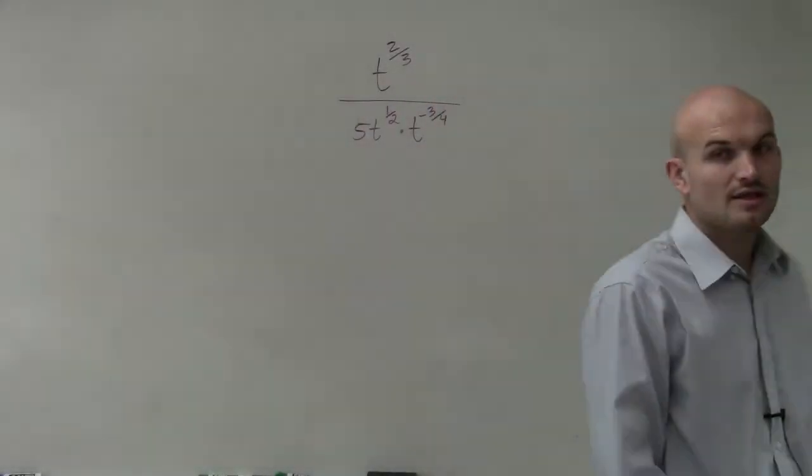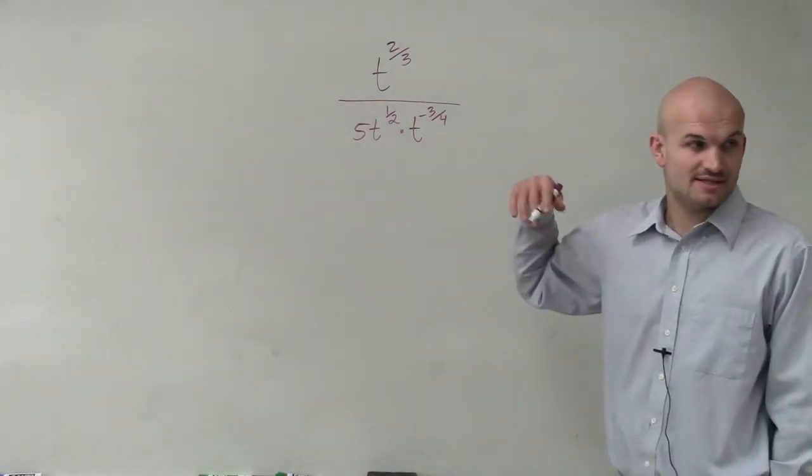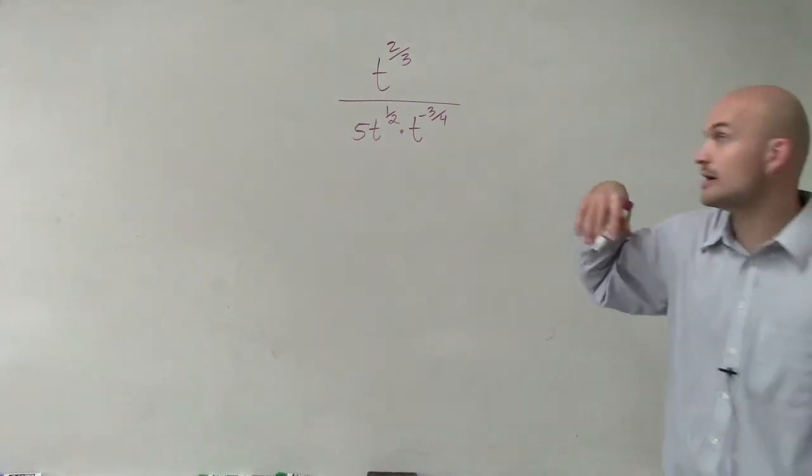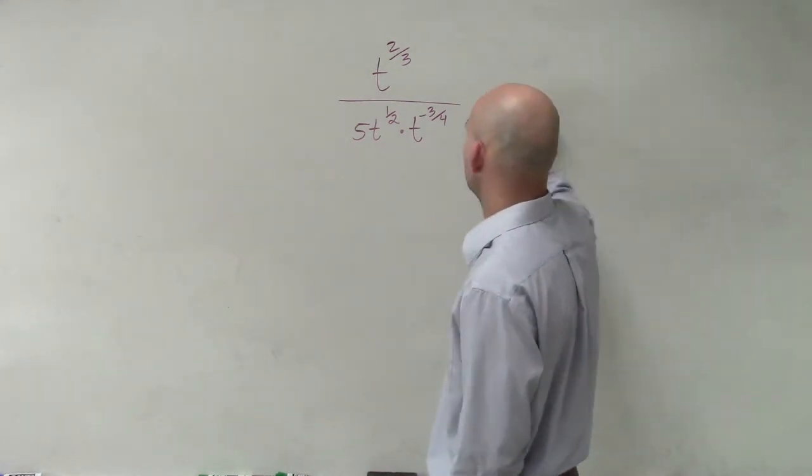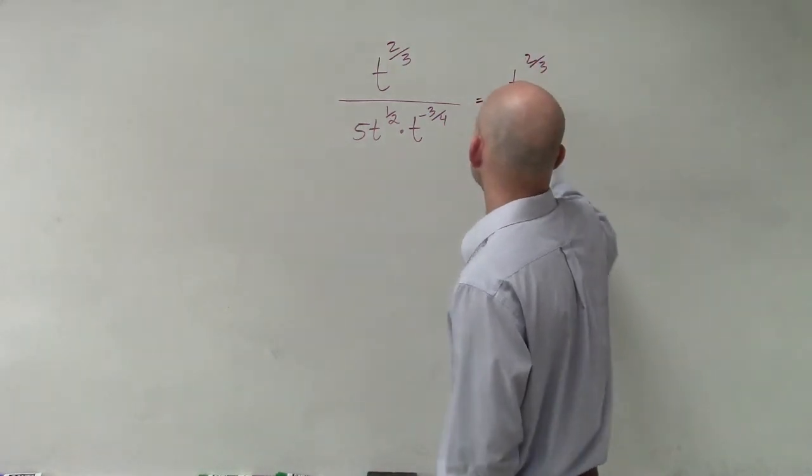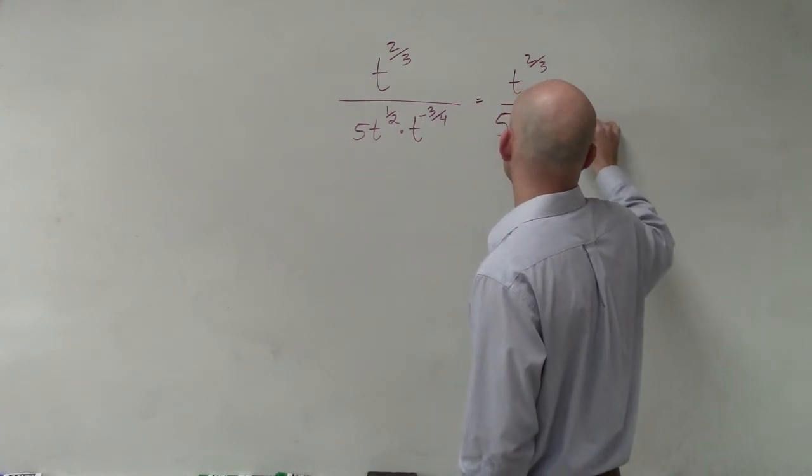I'm going to do number 24. Let's first simplify the problem as much as possible. We can multiply these, right? When we multiply, we add our exponents. So I can multiply this across. I get t to the 2 over 3 over 5 to the t, 1 half plus a negative 3 fourths.